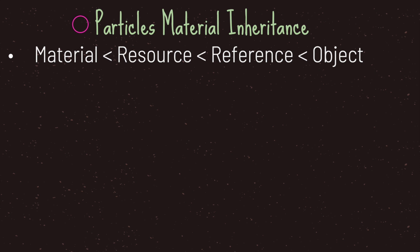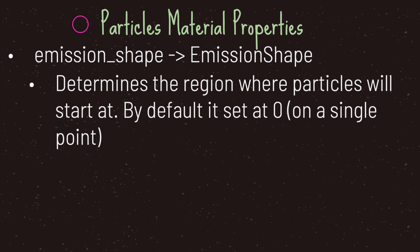The ParticlesMaterial class inherits from the Material class, which inherits from the Resource class. The first important property is called the emission shape, which is a data type of emission shape. It basically determines the region where particles will start. By default, this value is set to zero, meaning everything will start on a single point.